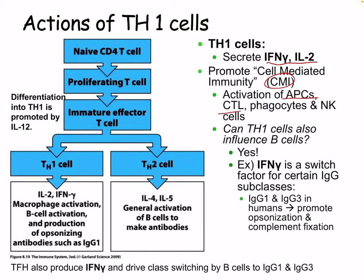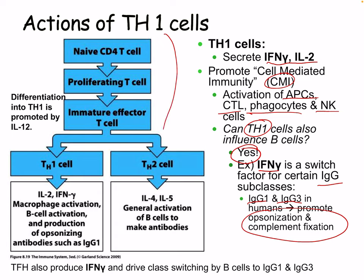Th1 cells promote CMI or cell-mediated immunity through activation of APCs, dendritic cells, phagocytes, and NK cells. They can also influence B cells — interferon gamma is a switch factor for certain IgG subclasses. Interferon gamma released from Th1 cells can influence B cells to switch to IgG1 or IgG3 in humans, which promote opsonization and complement fixation. Differentiation into Th1 is promoted by IL-12, and Th1 cells release IL-2 and interferon gamma, resulting in macrophage activation, B cell activation, and production of opsonizing antibodies such as IgG1. T follicular helper cells also produce interferon gamma and drive class switching by B cells to IgG1 and IgG3.